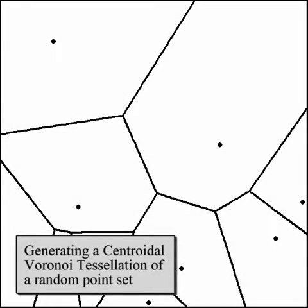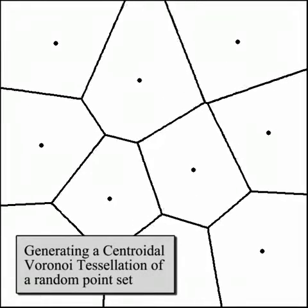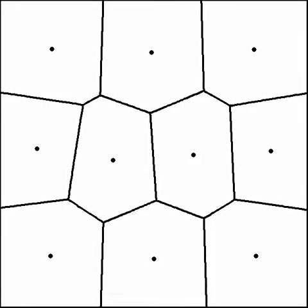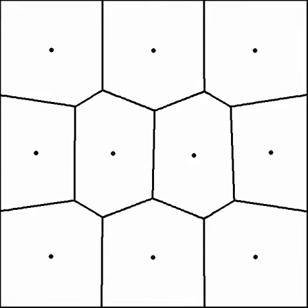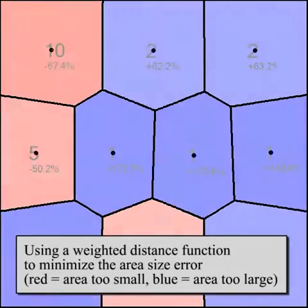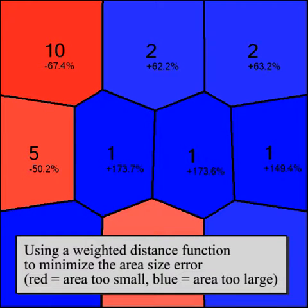Centroidal Voronoi tessellations enable a non-regular uniform subdivision of a given area. By assigning a weight parameter to each generator point, it is possible to control the size of the sub-areas.